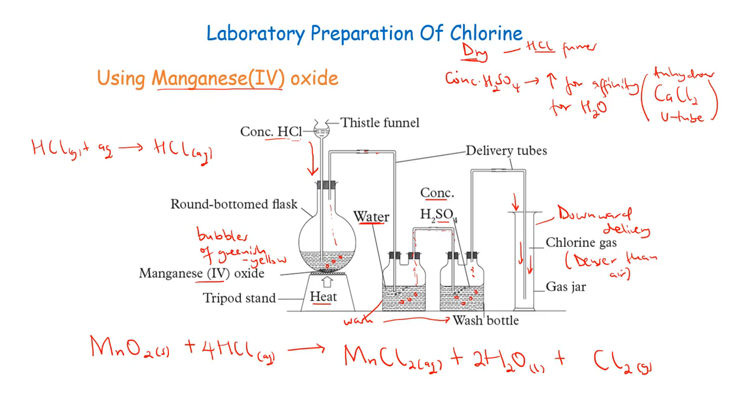If at all you don't want to prepare dry chlorine, the only setup you need to remove are these wash bottles. If you remove the water and the concentrated sulfuric acid, that means you will directly transfer your products from this round-bottom flask directly to our gas jar. So if at all you don't want to dry it or you don't have the necessary equipments, you can directly collect our greenish-yellow gas in this gas jar. That's all I have about the lab preparation of chlorine using manganese(IV) oxide and concentrated hydrochloric acid. This is the equation for the reaction. Thanks for watching.